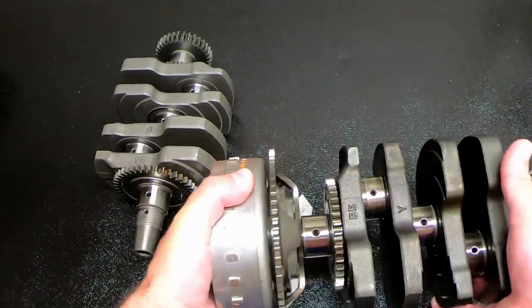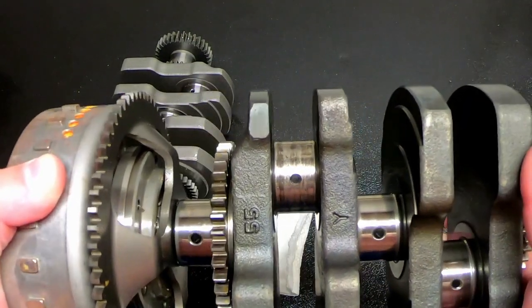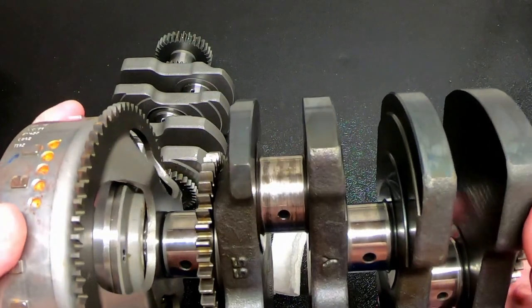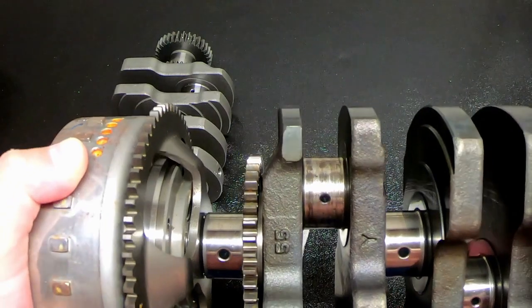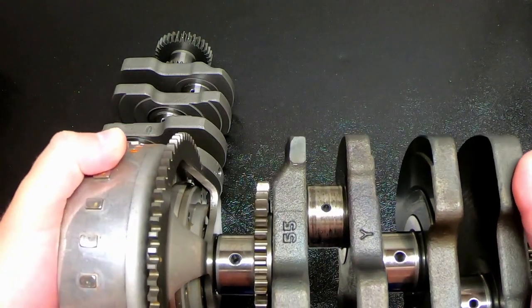Another term used in service manuals is FIM, which means full indicator movement. They both mean the exact same thing. The Ninja 400 uses TIR, so that's what I'm going to use.